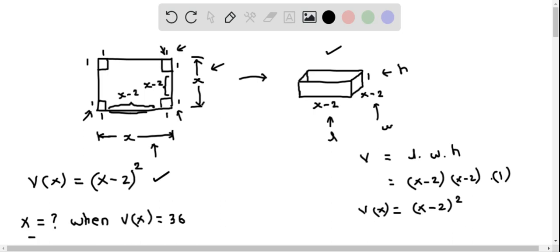And then we are asked to determine the x, that is the side length, when V(x) equals 36. So we replace V(x) by 36 in this equation. When I do that, I am going to get 36 equals (x-2) squared.